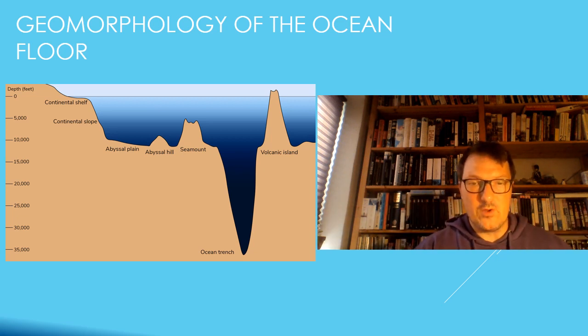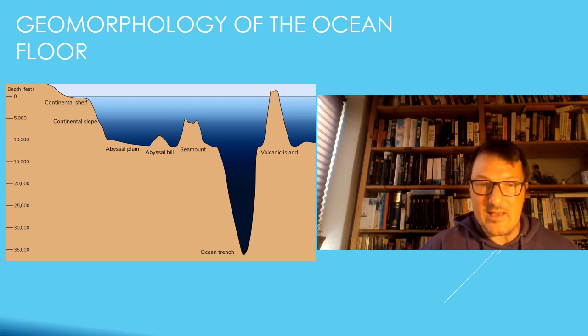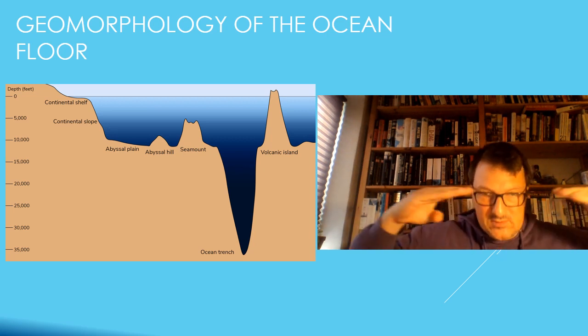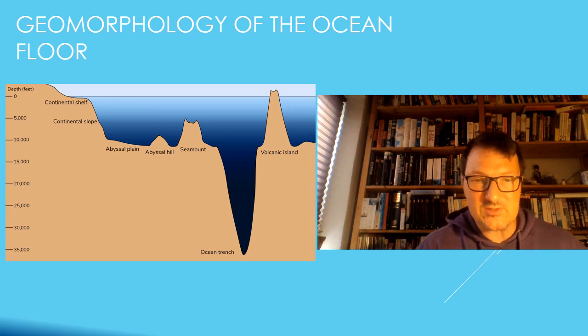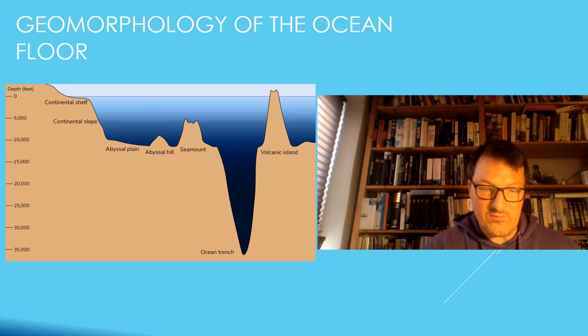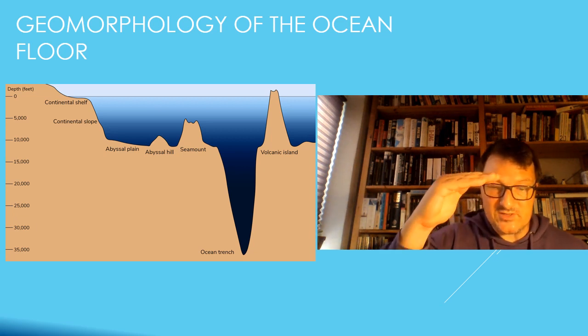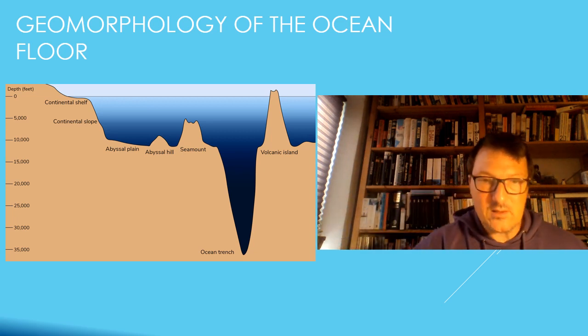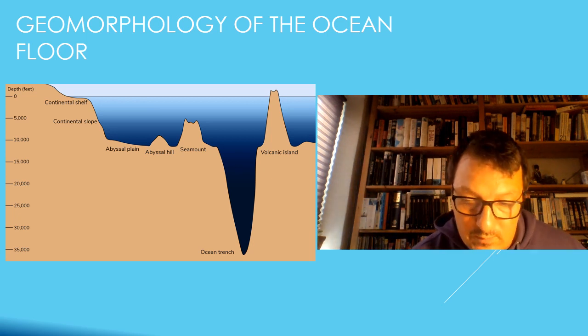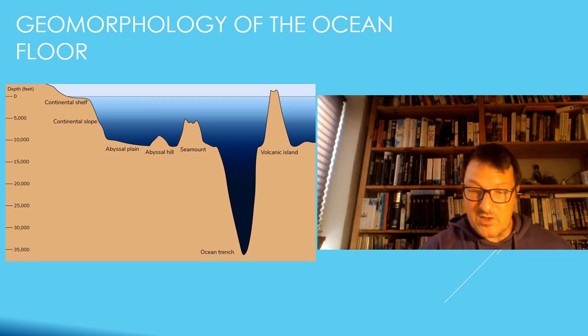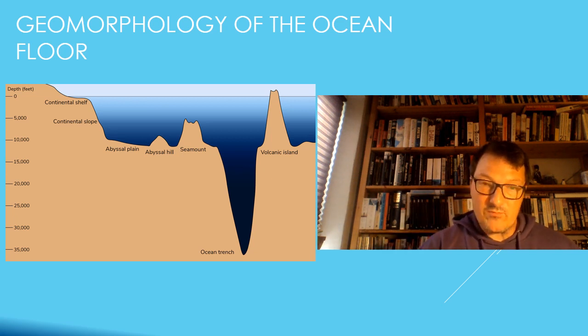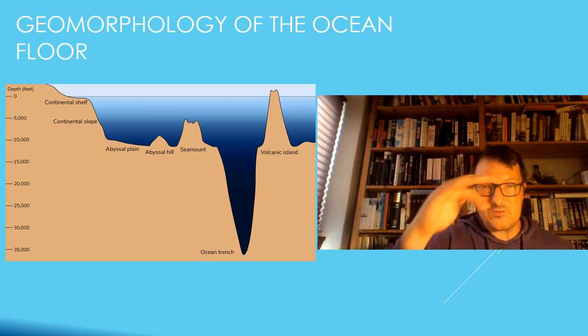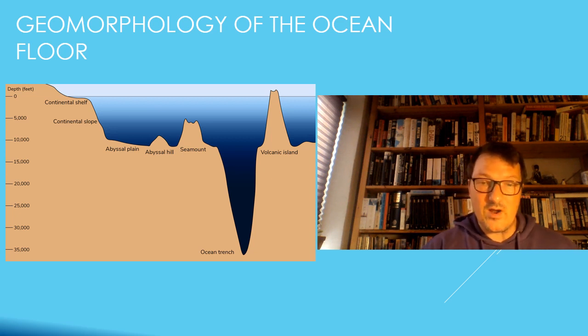So if we took all the water away from the ocean, which would be a terrible idea for many reasons, we would be able to see a quite interesting geography that we can't really see because it is covered by water at all times. So the sea bottom has many different features. The first we have is the continental shelf, which is a part of the continental plate that goes from the shore into the shallow waters. And that's quite flat going into the ocean. And that forms when we have continental crust that is below sea level.